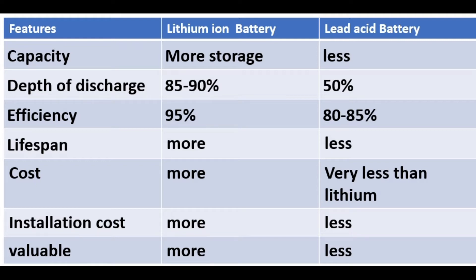You might have heard of the use of lead-acid battery and lithium-ion battery. Nowadays lithium-ion battery is generally used for low power applications, but lead-acid battery is used for high capacity, high power, high wattage requirement applications. Now in high power applications, lithium-ion battery is also being used, and there are some differences between the lead-acid and lithium technology.